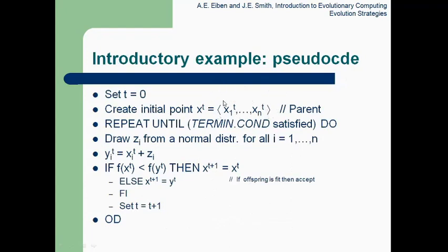Here is the pseudocode. We have the parent chromosome x1...xn at time quantum t. We draw zi from the normal distribution curve for xi. Then xi at time t plus zi gives y at time t. If the fitness of y(t) is greater than the parent, we select it as a new offspring. This is called a successful mutation — when the offspring has better fitness than the parent.